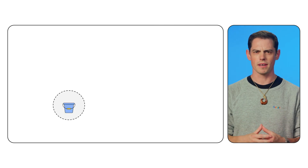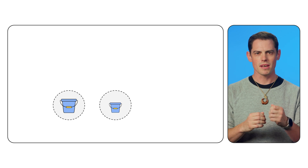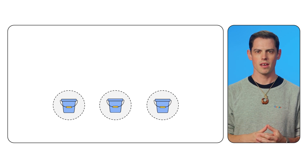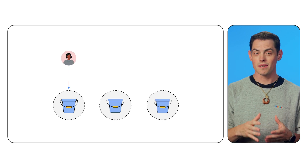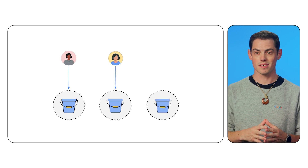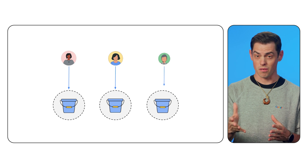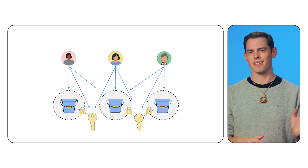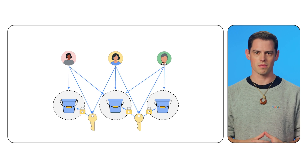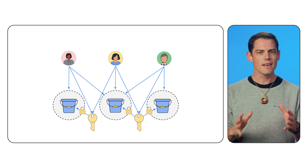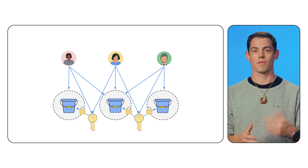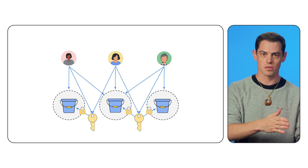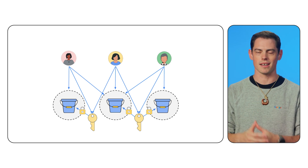So you've created a bucket, and your teammates all need access to the bucket. Do you need to give everyone access to your key that encrypts the bucket, as well as to the bucket itself? That just multiplies the complexity — now you have to keep track of resources and keys, and which resources each key protects.